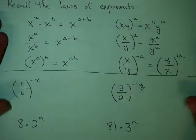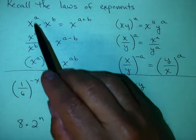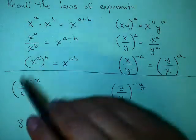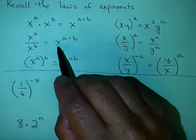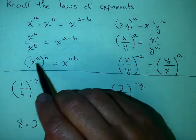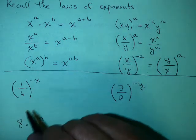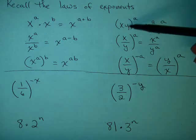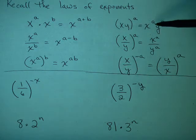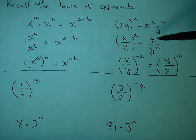Let's remember the laws of exponents from Math 94. x to the a times x to the b equals x to the a plus b. And x to the a over x to the b equals x to the a minus b. And x to the a raised to the b power equals x to the a times b. We also have the rules: x·y all raised to the quantity a is x to the a times y to the a. And x over y raised to the a is x to the a over y to the a.